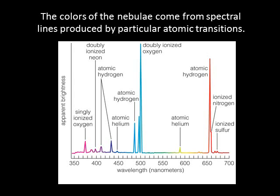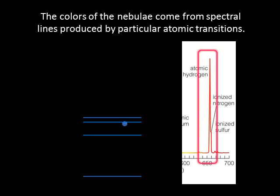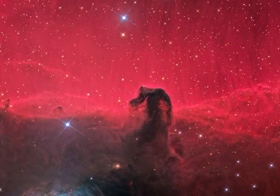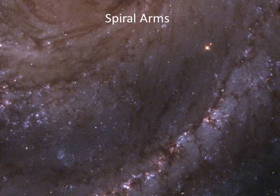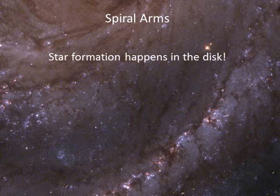The colors of the nebulae come from spectral lines produced by particular atomic transitions. For example, a red photon is produced by the transition in which an electron falls from energy level 3 to energy level 2 in a hydrogen atom. Ionization nebulae appear predominantly red in photographs because of all of the red photons released by this particular transition. It's the disk of the Milky Way that is home to molecular clouds and numerous clusters of young, bright blue stars surrounded by ionization nebulae. Therefore, we can infer that star formation takes place in the disk of our galaxy, not the halo.